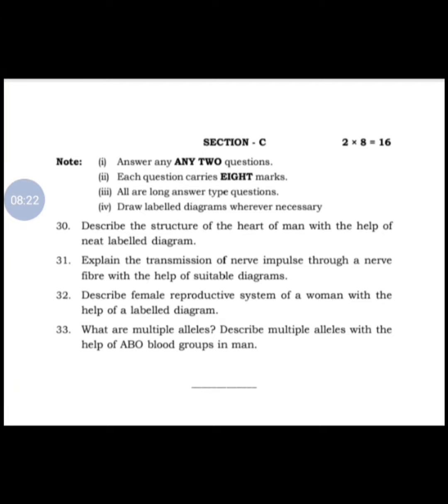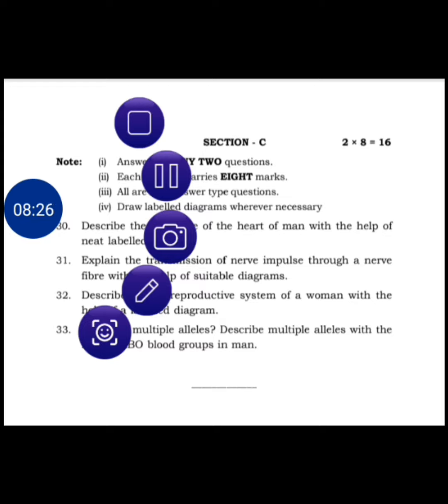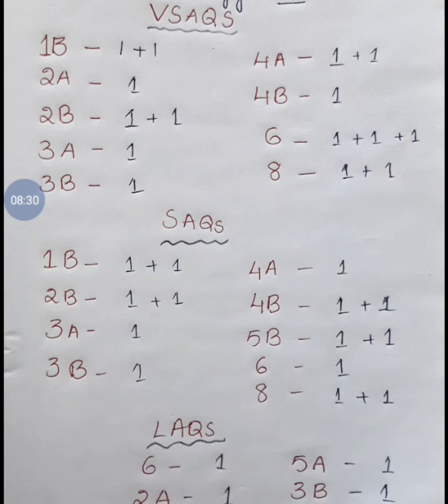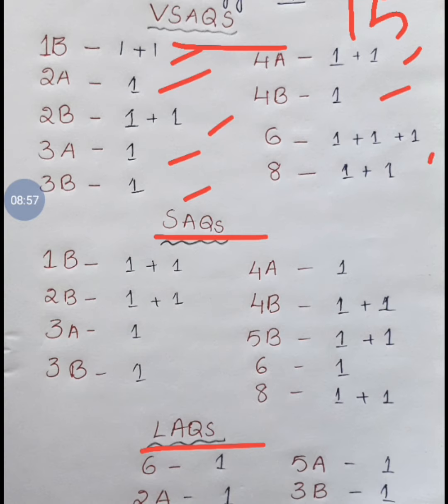Let me give you clarity of overall analysis of very short answers, short answers, and long answer questions. Overall, 15 very short questions they will give. From 1B: 2 questions, 2A: 1, 2B: 2, 3A: 1, 3B: 1, 4A: 2, 4B: 1, sixth chapter genetics: 3, last chapter applied biology: 2. See here students, from genetics chapter, there's a chance of asking 3 questions.